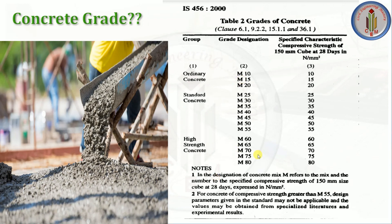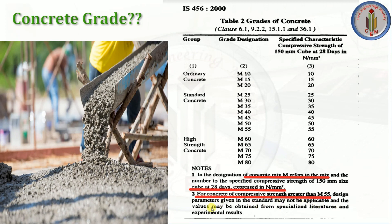In the designation, 'M' refers to the mix and the number refers to the specified compressive strength of a 150 mm cube at 28 days, expressed in N/mm². For concrete with compressive strength greater than M55, the design parameters given in the standard may not be applicable, and values may need to be obtained from specialized literature and experimental results.